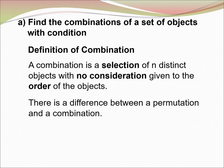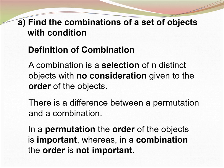There is a difference between a permutation and a combination. In the permutation, the order of the object is important, whereas in the combination, the order is not important.